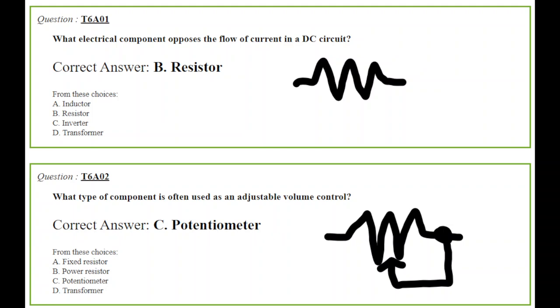So resistors oppose the flow of current in a DC circuit. Also an AC circuit they do too, but that's not the question. Question number two says, what type of component is often used as an adjustable volume control? Now that's in your older radios, and it's a potentiometer. Nowadays, most of our rigs use encoders, but let's not get there. The component that is used as an adjustable volume control could be a potentiometer, and you can see that there's a little wiper, and that goes from the right side and connects to that resistor, and it can be wiped across the total path of resistance to change that value.